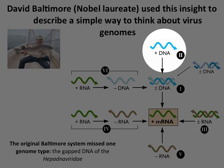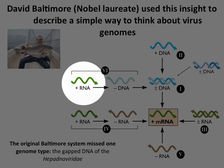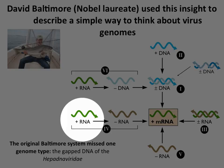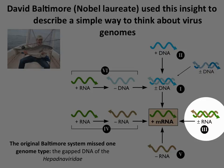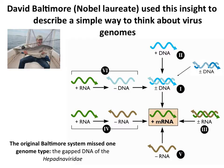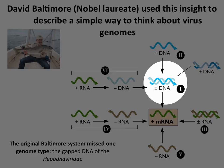He put single-stranded DNA plus-sense RNA that goes through a DNA intermediate, other plus-stranded RNA viruses, negative-stranded RNA viruses, and double-stranded RNA viruses. We're going to talk about each of these in detail. He also got double-stranded DNA, of course — all the ones that are numbered, he got.